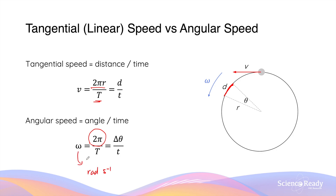The unit for omega, angular speed, is radians per second, which is different from linear velocity in metres per second. Like linear speed, we don't always need the whole revolution. We can use the angle of a particular sector of the circle divided by the time taken to complete it, given by the formula Δθ divided by time.